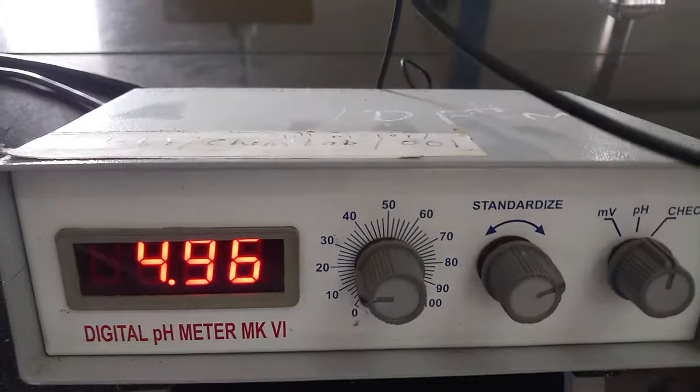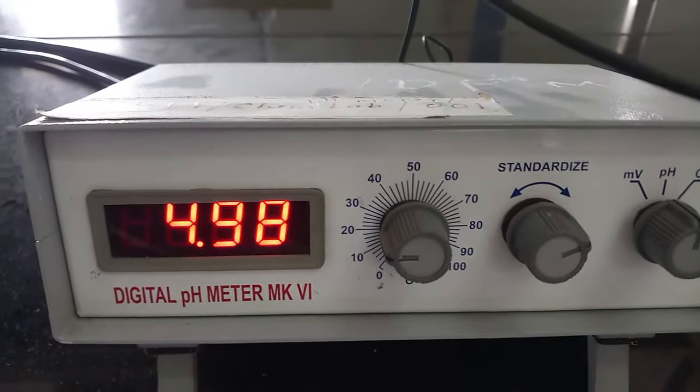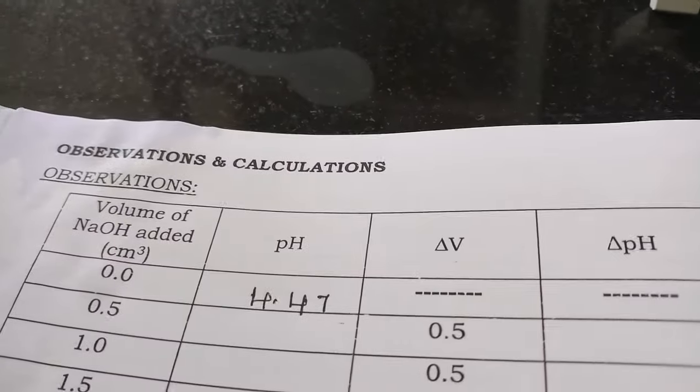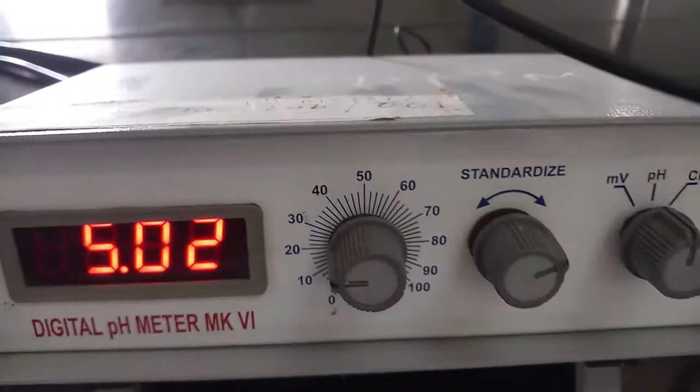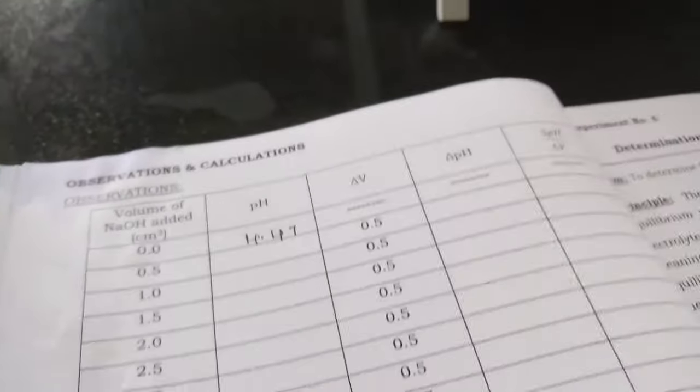So initially we had acetic acid, weak acid, therefore pH is less, 4.47. Now upon adding NaOH, pH slowly increases. So that change in pH we have to record here continuously.